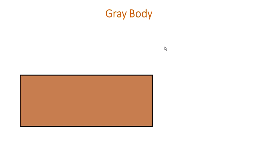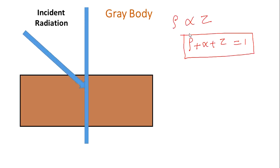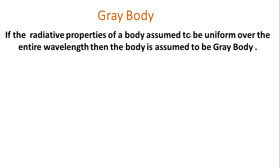Gray body means all properties are present — rho, alpha, and tau are all non-zero. Therefore rho plus alpha plus tau equals 1. If the radiative properties are assumed to be uniform over all wavelengths, then the body is assumed to be a gray body. Thank you one and all.